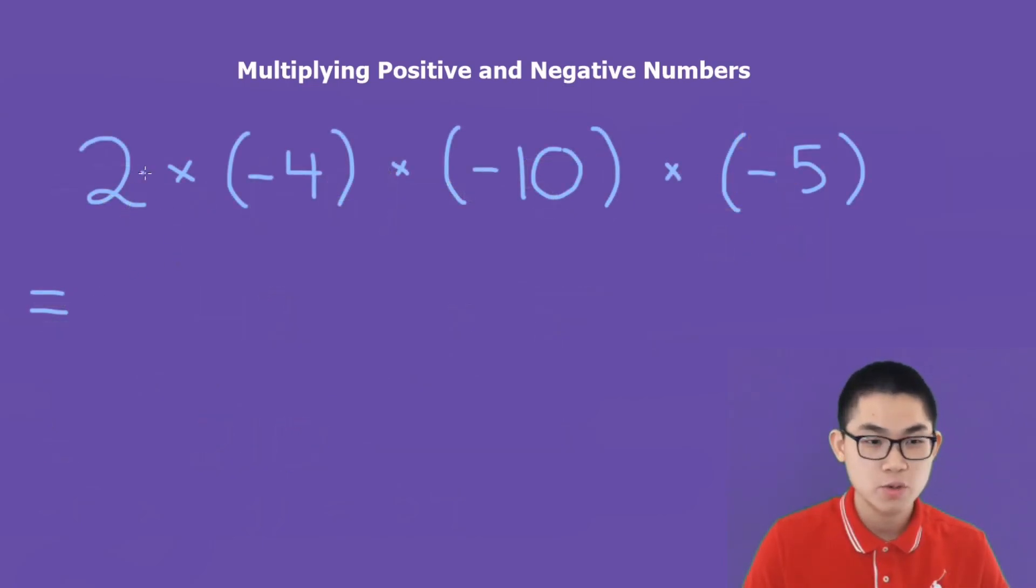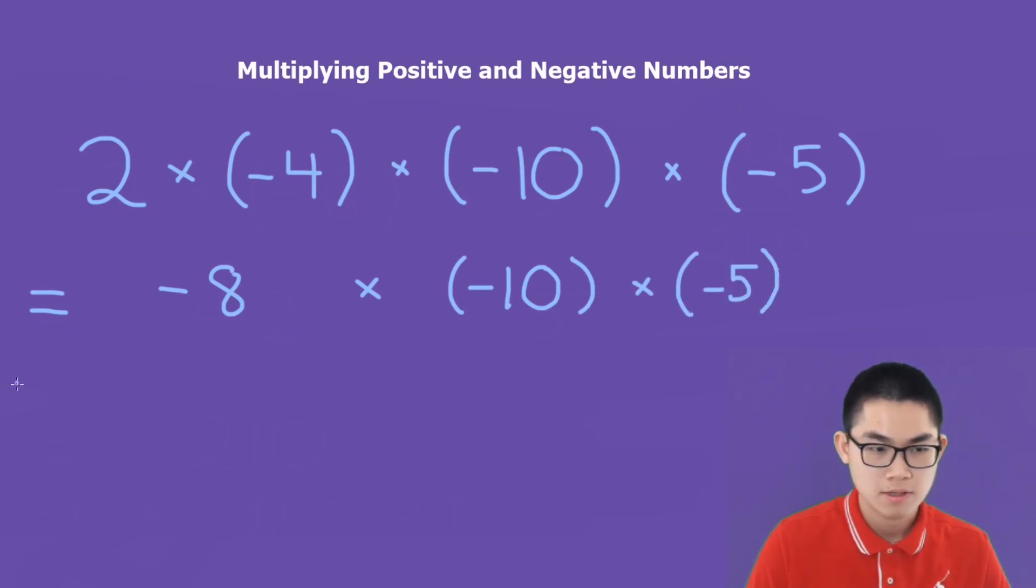We have 2 times negative 4 times negative 10 times negative 5. So 2 times negative 4 gives you negative 8. Negative 8 times negative 10 gives you positive 80. And what about 80 times negative 5? 80 times negative 5 gives you negative 400.